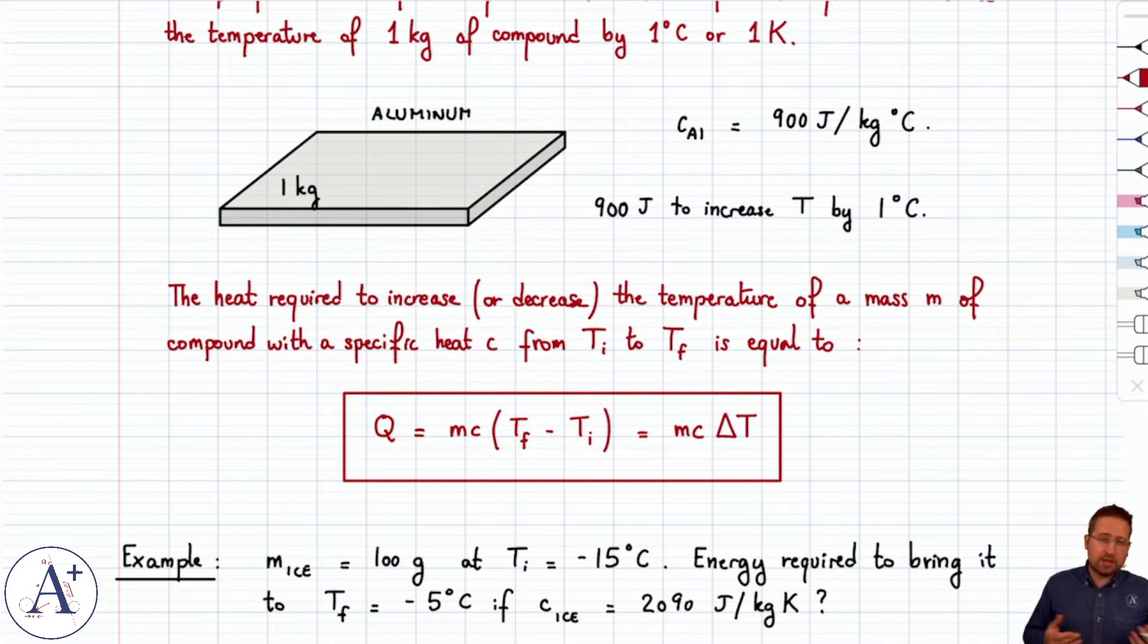And so Q is equal to mc delta T is the formula that will give us the amount of heat required to change the temperature, up or down, of your pure compound by an amount delta T. And that's the nice thing about that formula is that delta T takes care of making Q positive or negative.